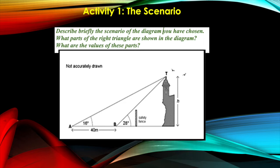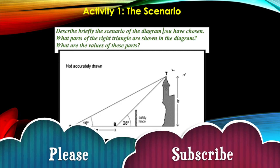Now what parts of the right triangle are shown in the diagram. The parts that are shown in the diagram of the right triangle, actually there are two right triangles here.